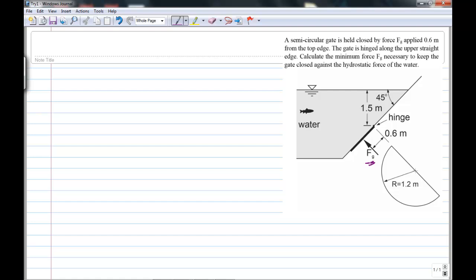Applied 0.6 meters from the top edge of the gate. The gate is hinged along the upper straight edge. Now one of the problems that students have with these types of problems is visualizing this. What you're seeing is a plan view of that semicircle. This edge here is actually where the hinge is and it's actually a horizontal surface. So you've got to imagine it sort of rotated in space.